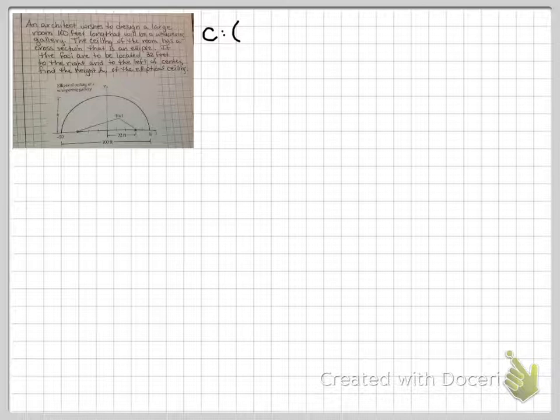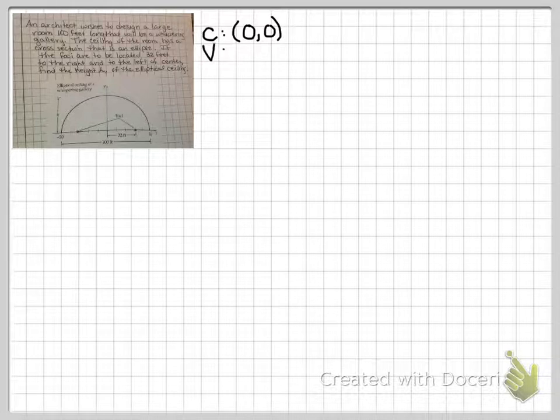You can see in the graph that they chose to put the center at 0, 0. We also know the vertices. The room was 100 feet across, so that means from the center of the room, one of the walls is at 50, 0.